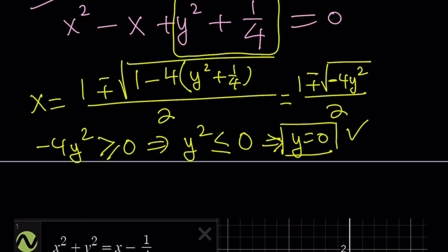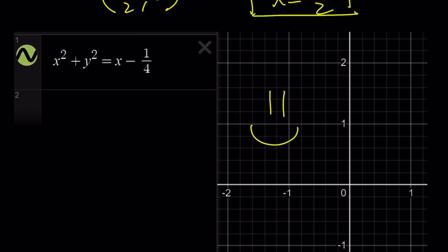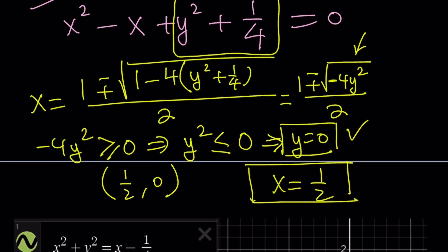You can plug in y = 0 here. That's the easiest way to find x. That gives you x = 1/2. What does that mean? It means the solution is a single point. Unfortunately, Desmos does not show that. So (1/2, 0) is just a point like this. That's what the graph is all about. That's why you don't see any graphs. It just doesn't graph it because it's a single point.